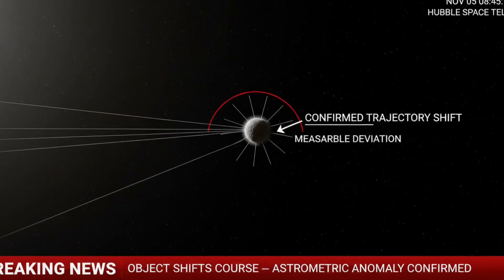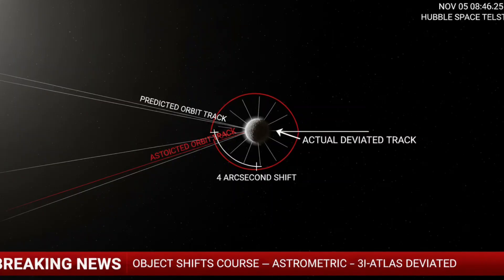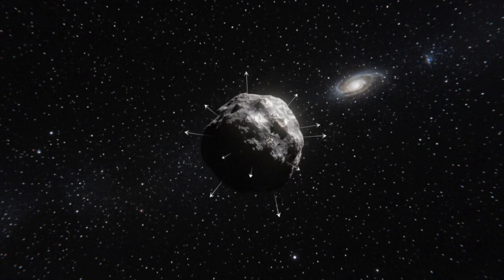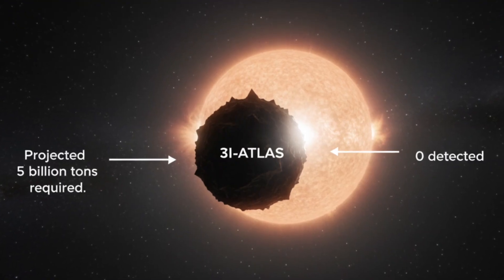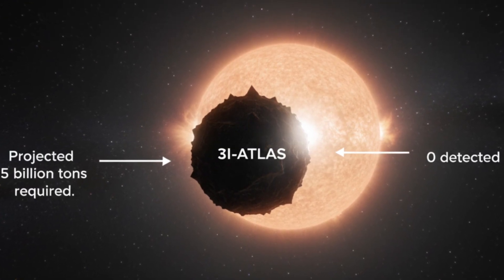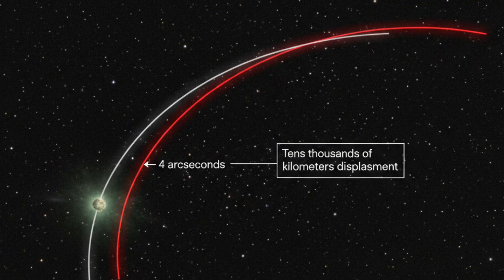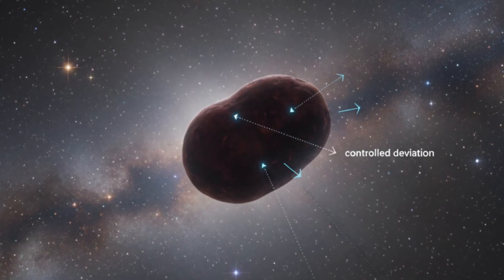Then the trajectory shift was confirmed. The object had deviated by 4 arcseconds, just a sliver of visual angle, but enough to translate into tens of thousands of kilometers of lateral displacement. A natural comet can be nudged by outgassing, but outgassing is chaotic, unpredictable, and usually rotationally destabilizing. 3IATLAS did not wobble, it did not tumble. It moved with a smooth, calm precision, as if something inside was adjusting its path in controlled increments. The deviation wasn't random, it was measured, it was intentional, and it was accelerating along two axes at once. A sunward pull and a perpendicular push, converging into a vector that no comet's jets could produce. This wasn't the scattered impulse of frozen gases erupting from cracks. This was controlled acceleration.